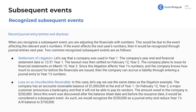Here are examples of when we record journal entries and disclose. If we're recording a journal entry, we're also going to disclose by nature of it. When we recognize a subsequent event, we're adjusting the financial statements with numbers — recording a journal entry and adjusting those numbers. This is due to the event affecting the relevant year's numbers. If the event affects next year's numbers, it will be recognized through journal entries next year.